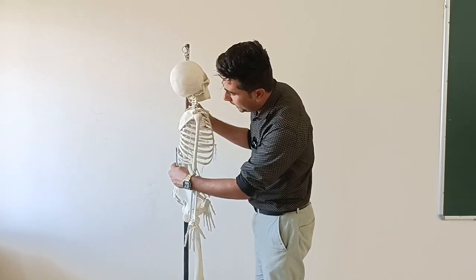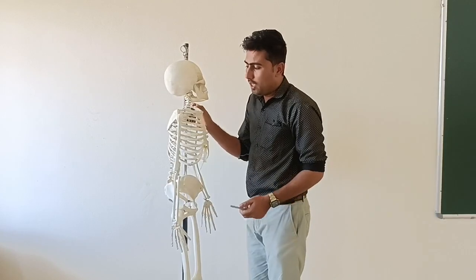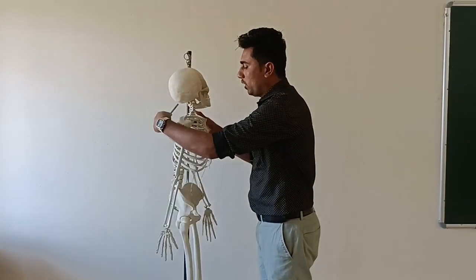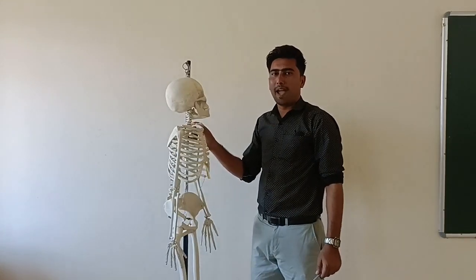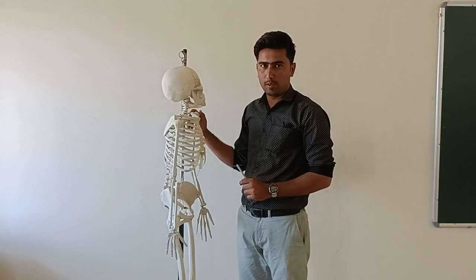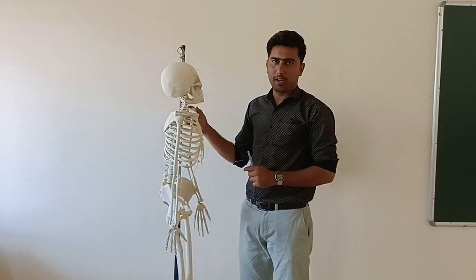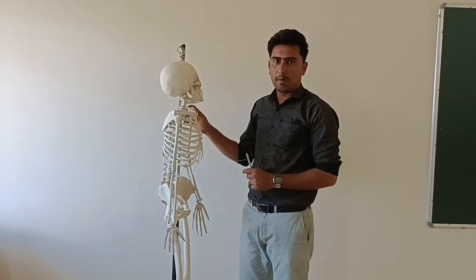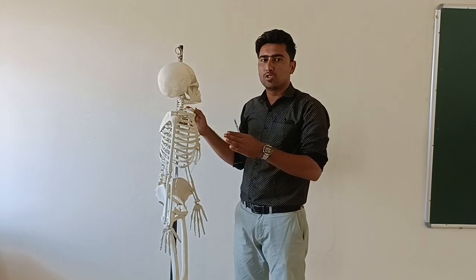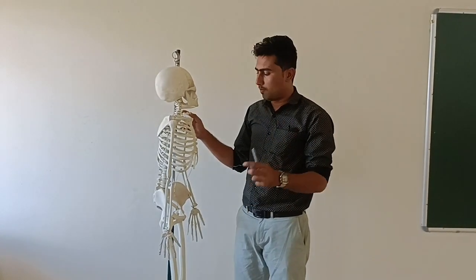The backbone of the human body contains 26 vertebrae, which are the cervical, thoracic, lumbar, sacrum, and coccyx. If you count the fused bones separately, there are 33 vertebrae in total.